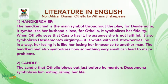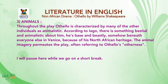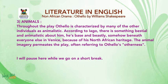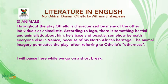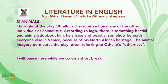The next symbol is the candle. The candle that Othello blows out just before he murders Desdemona symbolizes him extinguishing her life. The last symbol is animals. Throughout the play, Othello is characterized by many of the other individuals as animalistic. According to Iago, there is something beastly about him — he is base and beastly, somehow beneath everyone else in Venice because of his North African heritage. The animal imagery permeates the play, often referring to Othello's otherness.